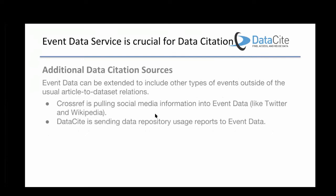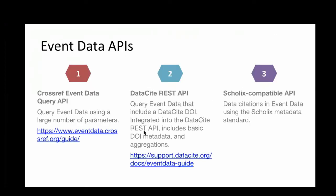Event data could be extended to include other types of events outside the usual article-to-dataset relations. CrossRef has been pulling social media information into event data, like Twitter and Wikipedia mentions. DataCite has been involved in a project called Make Data Count, which involves getting data repository usage reports submitted to us that we can put into event data as events around separate DOIs. Both CrossRef and DataCite have separate APIs for accessing event data, tailored for our particular audiences.